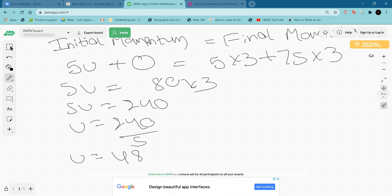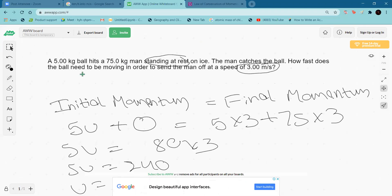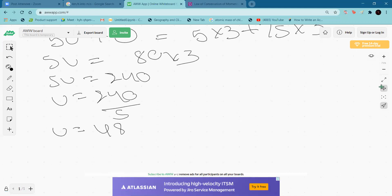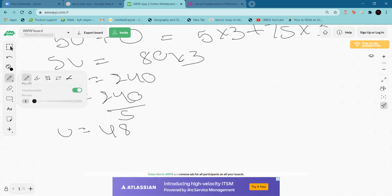The problem asked how fast the ball needs to be moving to send the man off at 3 meters per second. The ball needs to be moving at 48 meters per second.